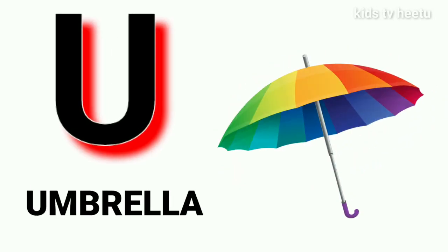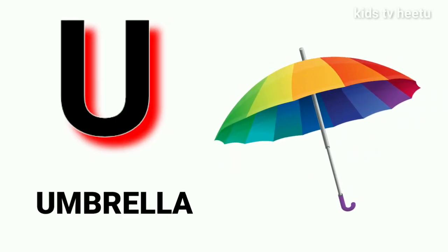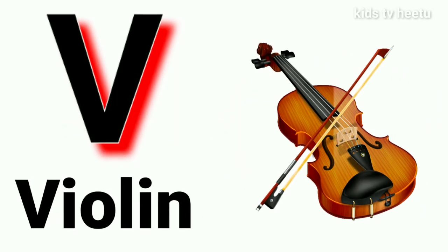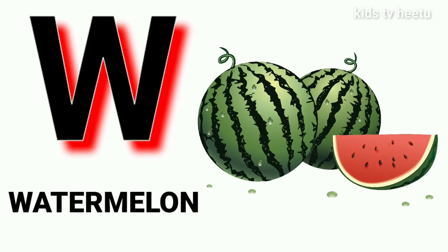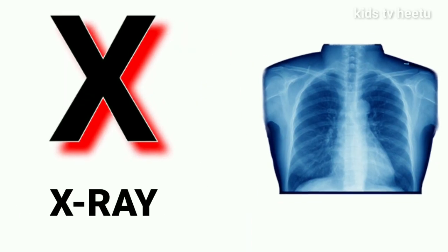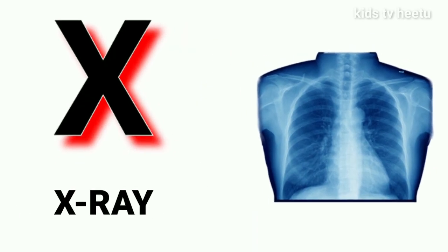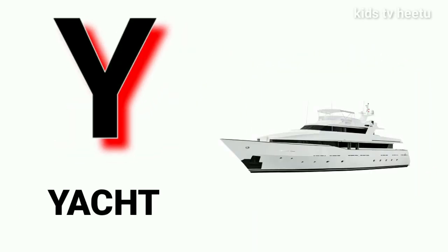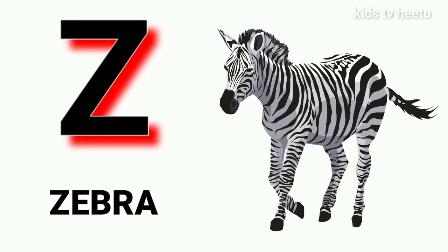S for sun, T for train, U for umbrella, V for violin, W for watermelon, X for x-ray, Y for yard, Z for zebra.